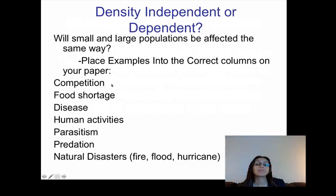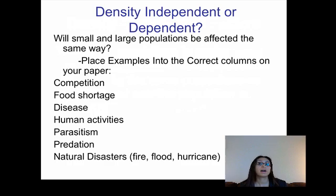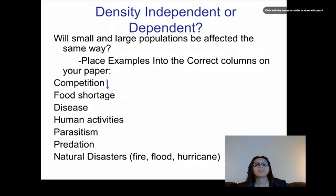Competition: think of a small population versus a large population. Is competition going to be more intense in a smaller or larger population? In a bigger population there's going to be a lot more competition for resources such as water, food, and space. So competition is an example of a density dependent factor — the more individuals, the more competition there is.